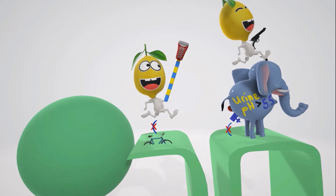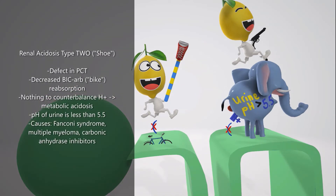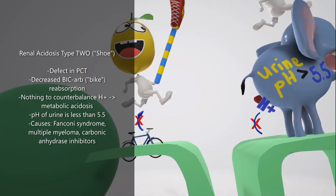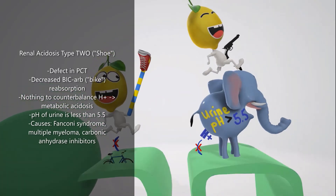RTA type 2 is represented by the lemon with the shoe — the shoe represents 2. He's standing by the PCT because RTA type 2 affects the PCT. Specifically, there's a defect in PCT bicarbonate reabsorption — the bike stuck in the tubule reminds us of this. This defect leads to increased excretion of bicarb in the urine, causing a metabolic acidosis since there's nothing to counterbalance the hydrogen in the blood.